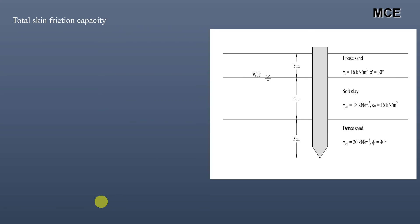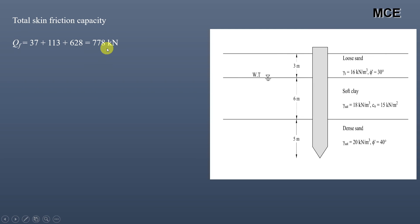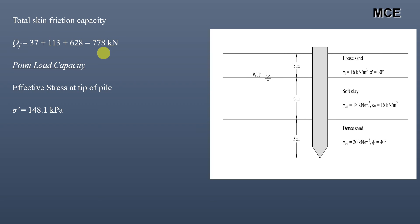The total skin friction capacity of the pile in all three soil layers is 37 + 113 + 628 = 778 kN. Next we calculate the point load capacity. The effective stress at the tip of the pile was found to be 148.1 kPa.